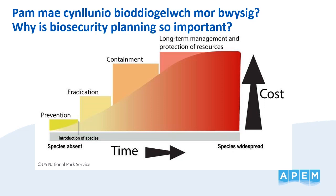This diagram from the US National Park Service demonstrates the importance of prevention, early detection and rapid response. As the time increases from the introduction of the species and the more widespread it becomes, the cost of actions increases, with long-term management being costly and time consuming. Additionally, eradication is very difficult, especially in the marine environment, so the focus should be on prevention to reduce the risk of introduction and spread of INNS in the first place. By addressing INNS early, we can reduce the risk of impacts to the marine environment and reduce the potential costs to industry. As the old adage goes, an ounce of prevention is worth a pound of cure.